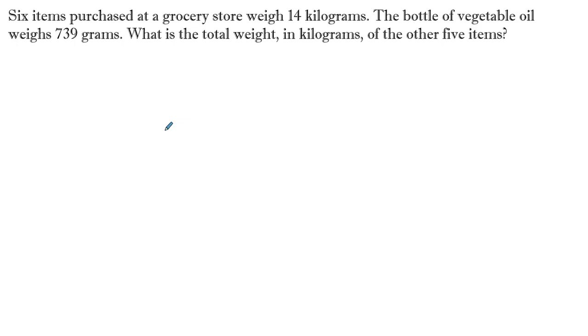Six items purchased at a grocery store weigh 14 kilograms. The bottle of vegetable oil weighs 739 grams. What is the total weight in kilograms of the other five items? Let's start by converting everything into the same unit. Since we want to know the total weight in kilograms, we should transfer everything else we have, such as the grams here, into kilograms. Now one trick we have for dealing with these, there's an acronym, it goes a little like this.